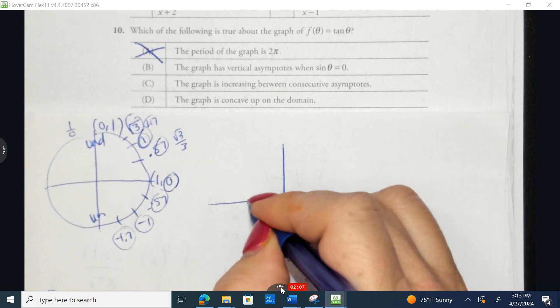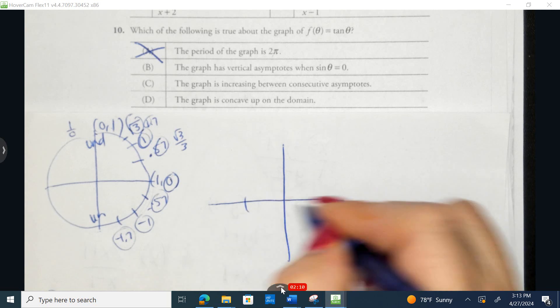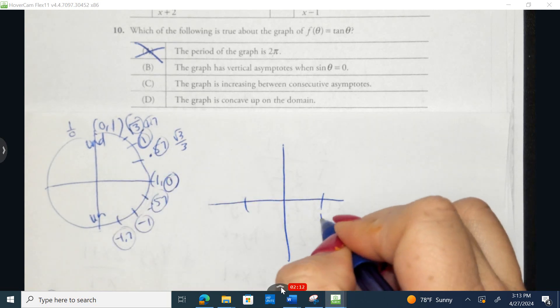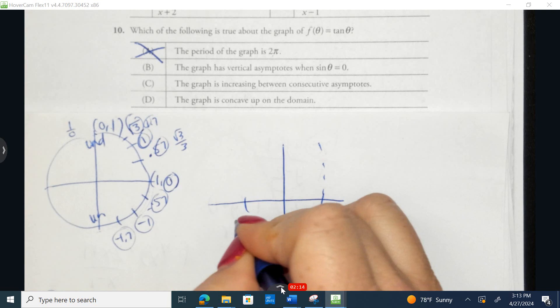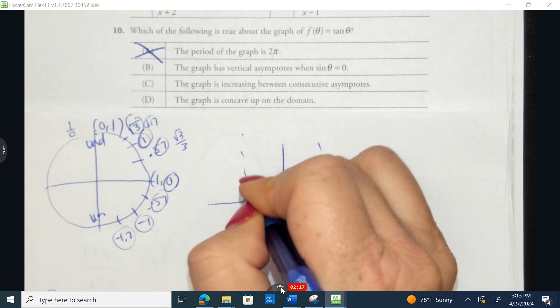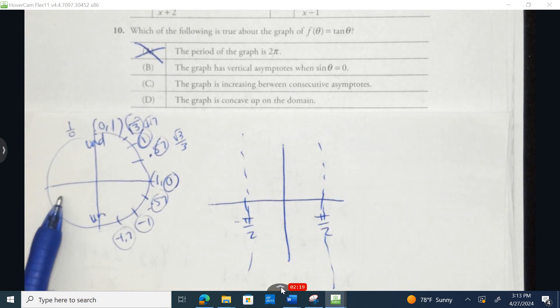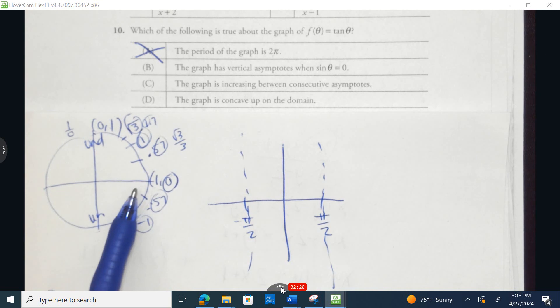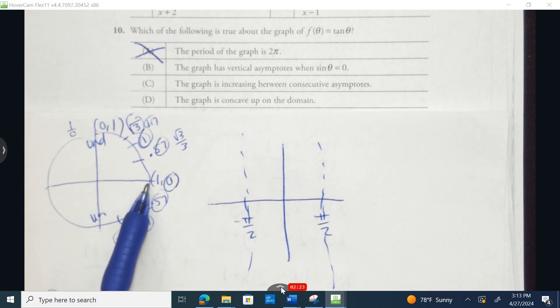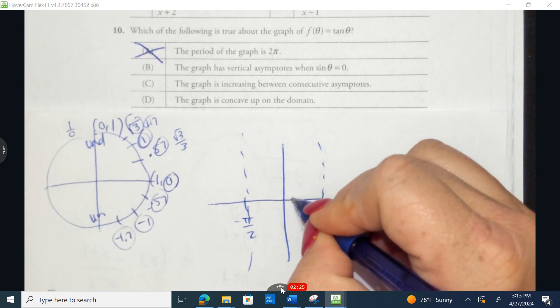This is going as far as π over 2 and negative π over 2. Now, if I was going to graph the output values for tangent, so if I go here to π over 6, I'd be at 0.57.